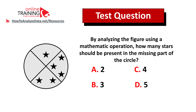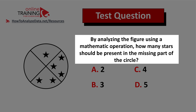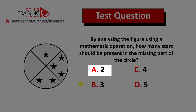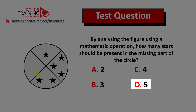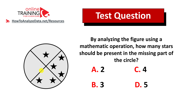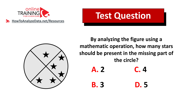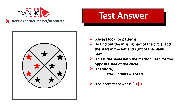Let's look at a question which tests your reasoning and math skills: by analyzing the figure using a mathematical operation, how many stars should be present in the missing part of the circle? You have a circle broken into four equal parts — three parts already have one, two, and three stars respectively — and four choices: choice A two, choice B three, choice C four, and choice D five. Give yourself 10 to 20 seconds to come up with the answer.